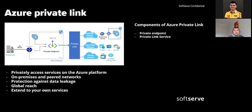We can manage connection requests using an approval call flow, which we'll discuss later. Additionally, Azure Private Link works for consumers and services belonging to different Azure Active Directory tenants — in other words, we can expose our private link service to anybody in Azure, including our customers.